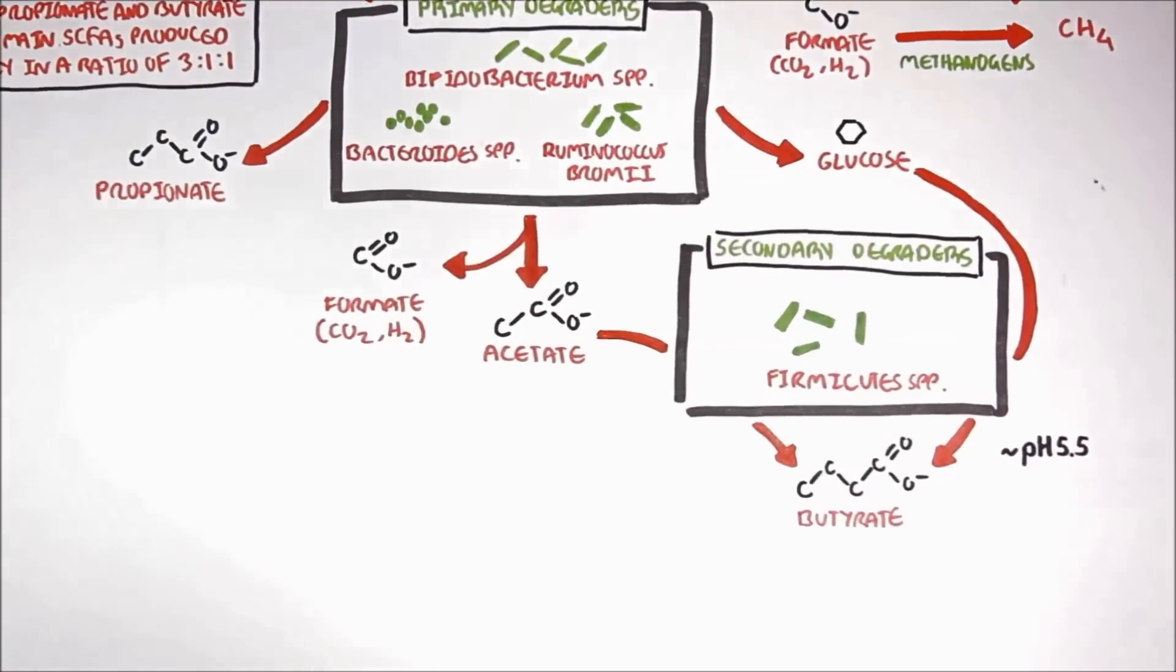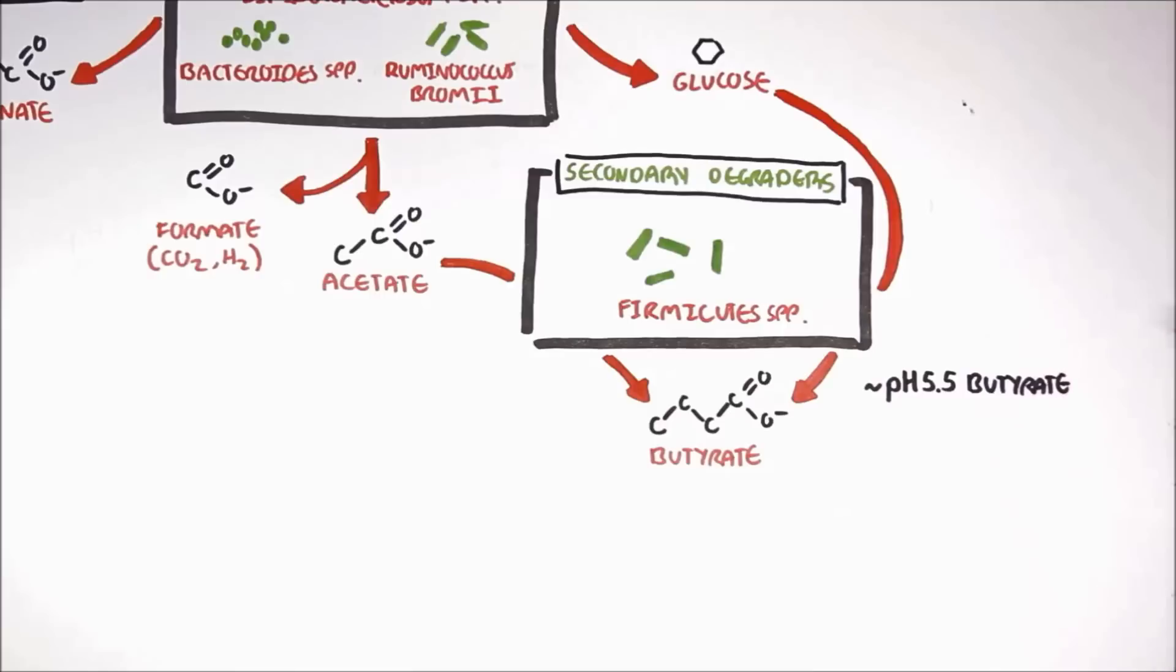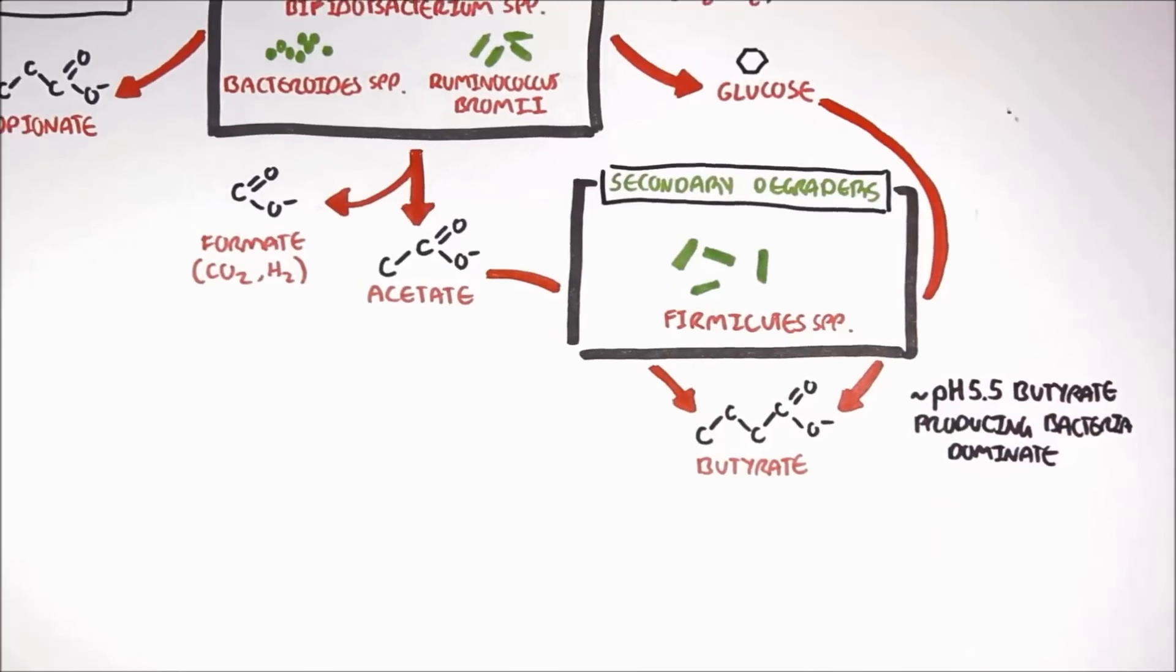At a low pH, about 5.5, butyrate-producing bacteria are known to dominate the colon.